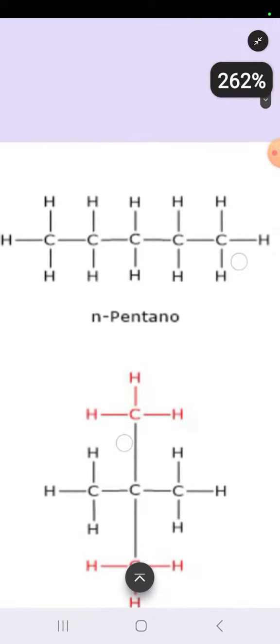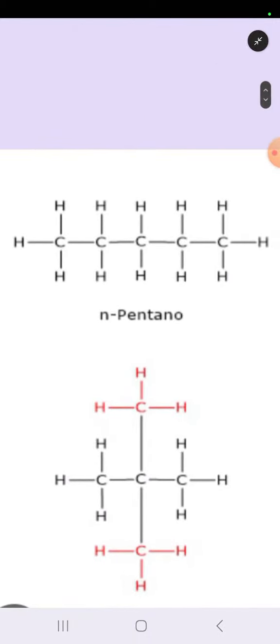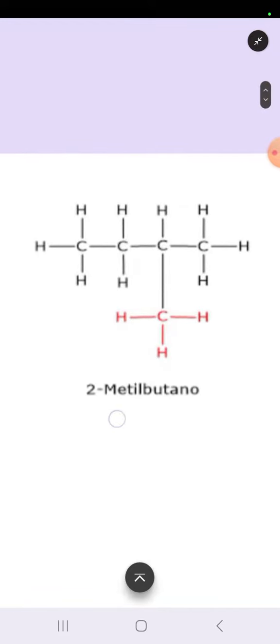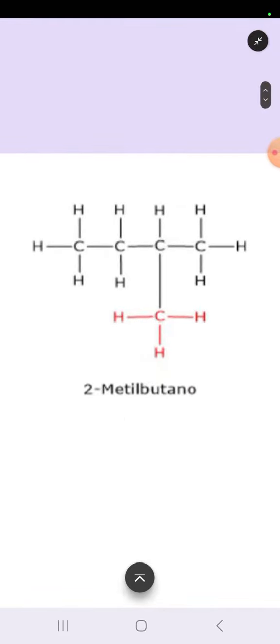The first example shows n-pentane, in which five carbon atoms are arranged in a straight chain. Now the same five carbon atoms may be arranged in a different way to give another type of compound.